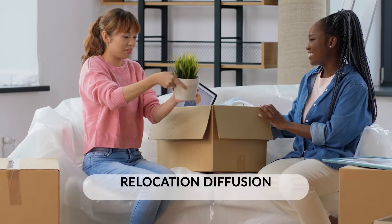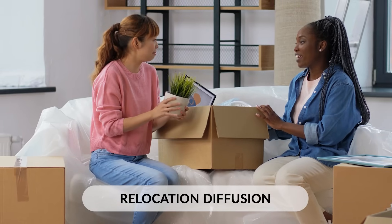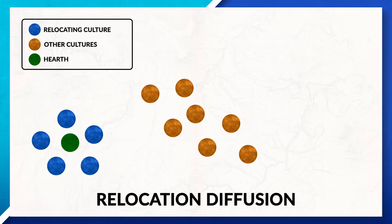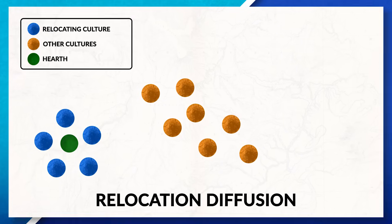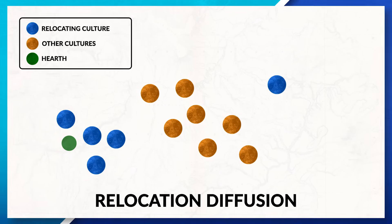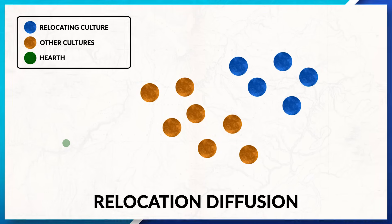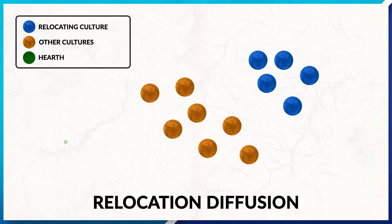Relocation diffusion happens when a culture or group of people physically moves from one place to another. This type of diffusion does not involve new individuals taking on the trait that is being spread — the number of people participating in this culture, or believing in a certain idea, stays the same. Since diffusion is happening due to migration, we will often see the hearth start to shrink and possibly die off, because the hearth becomes weakened as more people leave and relocate to the new place.